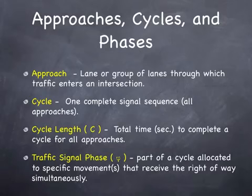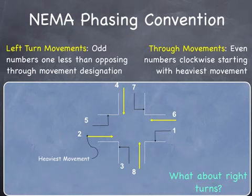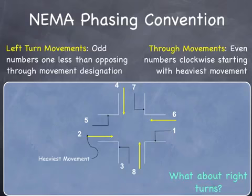A phase is the part of the cycle that is allocated to a particular movement; the Greek symbol phi is used to denote it. When we say it is allocated to a specific movement, it means that movement receives the right-of-way. There might be multiple movements that receive right-of-way simultaneously, as long as they are not conflicting. The northbound movement and the southbound movement might both get the green light at the same time — they are on the same phase and they are not conflicting.